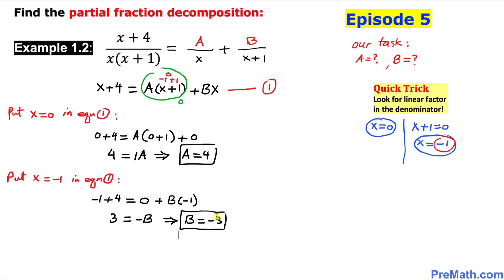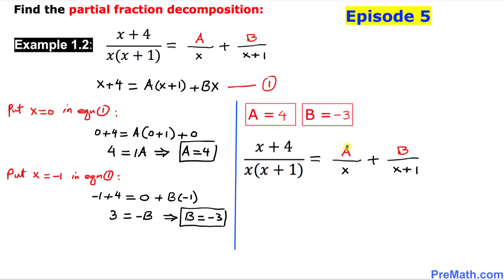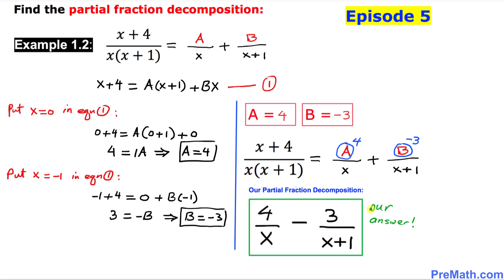So our A value turns out to be 4 and B value turns out to be negative 3. In our partial fraction, wherever we see A we replace it by 4, and wherever we see B we replace it by negative 3. And thus here is our final answer. Thanks for watching and please don't forget to subscribe to my channel for more exciting videos.